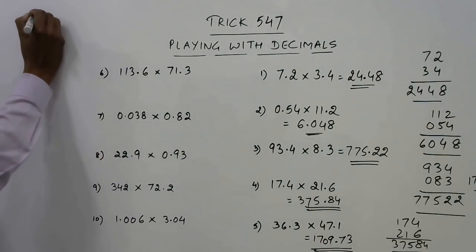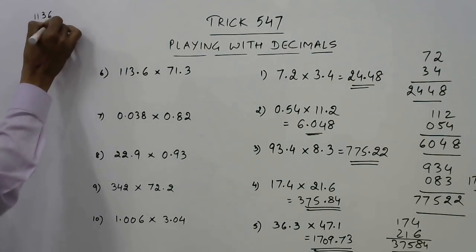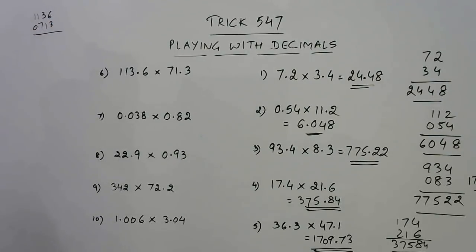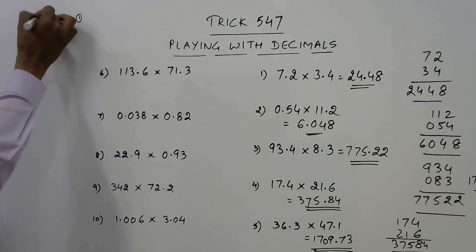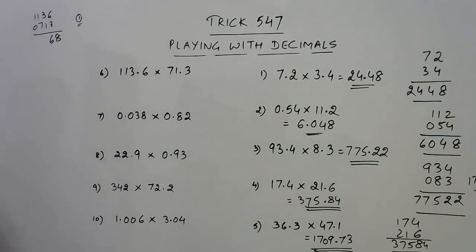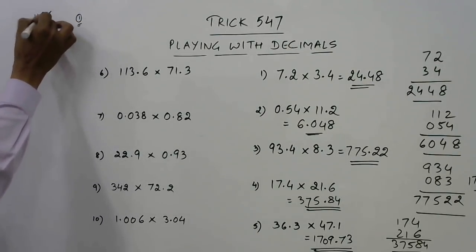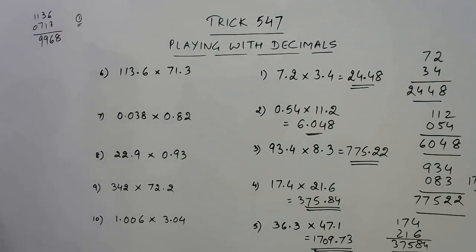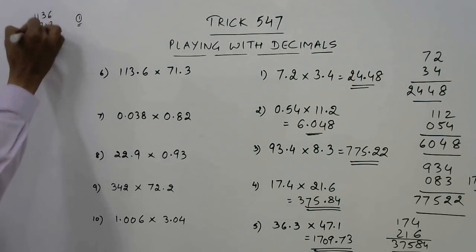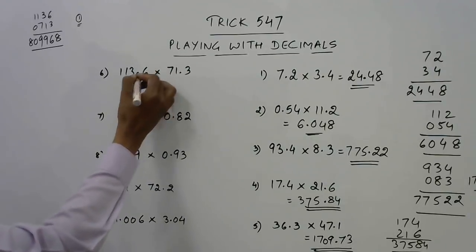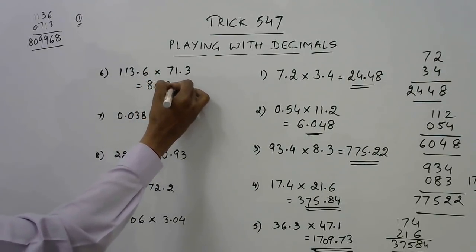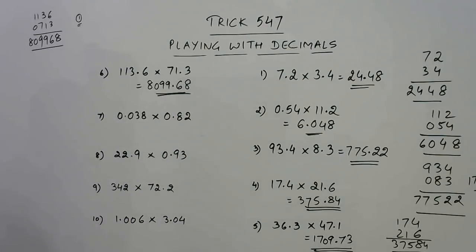Now, this one. This is 1136 and 713. So I will put a 0 here. Now I will start multiplying. The product of these two numbers is 809968. So your answer will be 8099.68. You can verify using the calculators whether we are getting the answer correct or not.